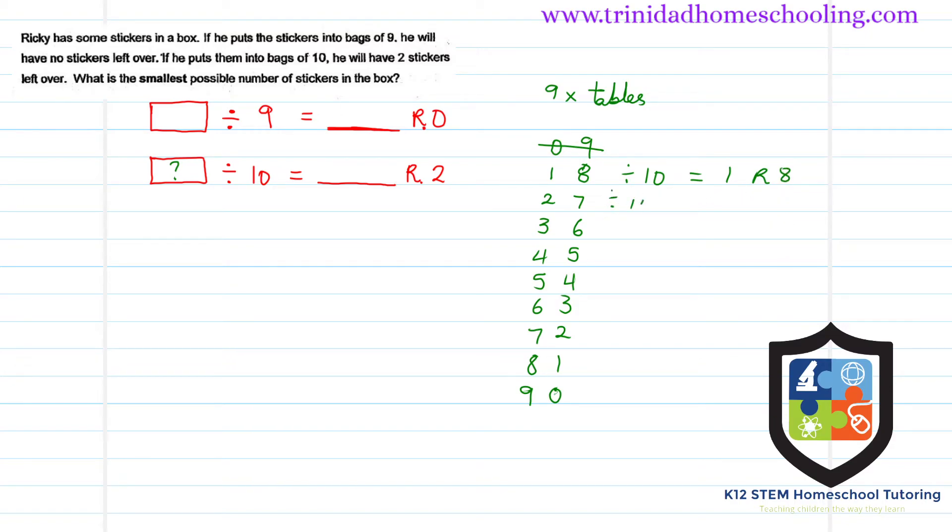If I divide thirty-six by ten... If I divide forty-five by ten, I will have four tens and a remainder of five. If I divide fifty-four by ten, I'll have five tens and a remainder of four. So none of these so far is giving us a remainder of two.